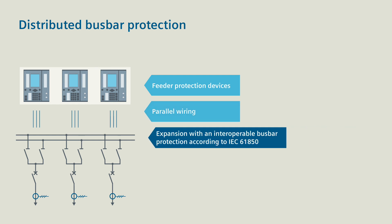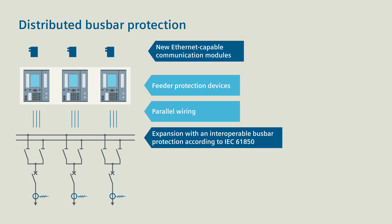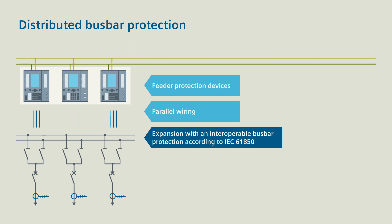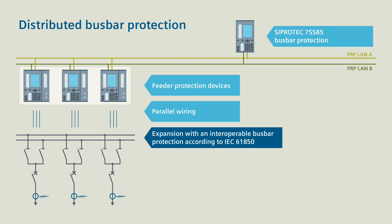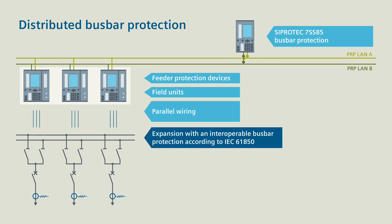For the expansion with an interoperable bus bar protection according to IEC 61850, you only need one of our new Ethernet-capable communication modules for each protection device. You link these via a redundant PRP LAN and connect a CProtek 7SS85 bus bar protection to it. After a brief disconnection, the feeder protection devices also function as field units of the bus bar protection and deliver all necessary process data to the CProtek 7SS85 via the PRP LAN.